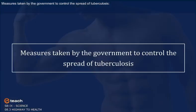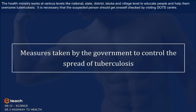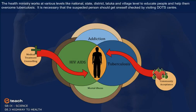Measures are taken by the government to control the spread of tuberculosis. The health ministry works at various levels — national, state, district, taluka and village level — to educate people and help them overcome tuberculosis. It is necessary that the suspected person should get themselves checked by visiting a DOT Center.